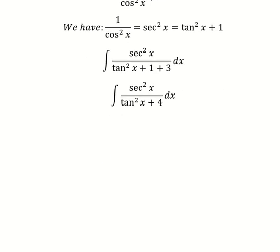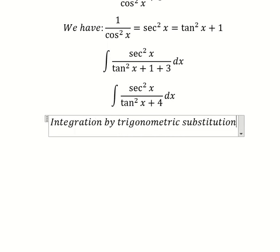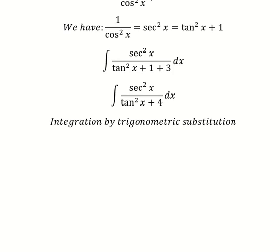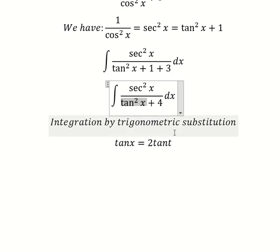Next we can use integration by trigonometric substitution. So I will put tan x equals 2 tan t, because if I put this one in here we have 4 tan t squared, and we can do factorization.